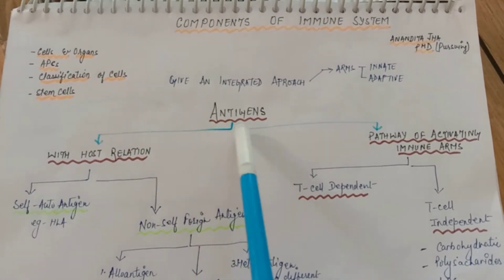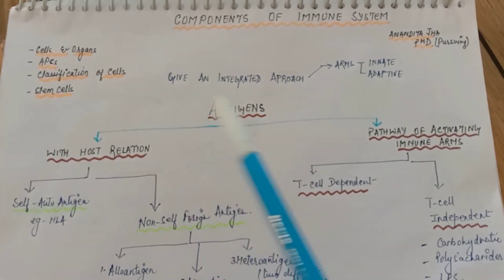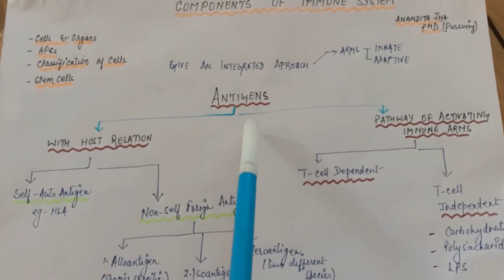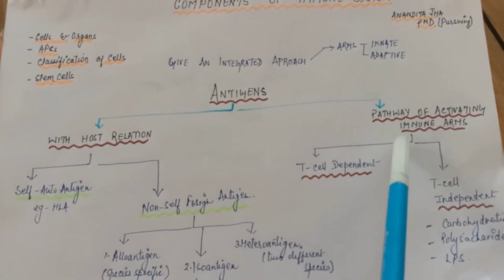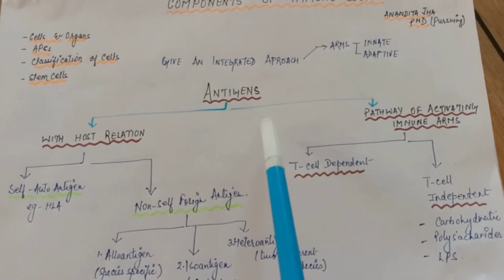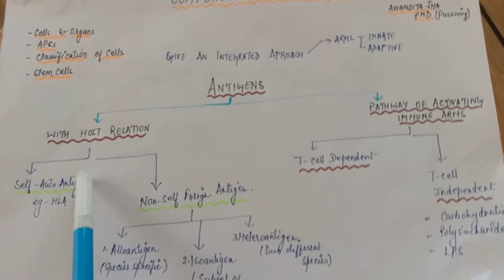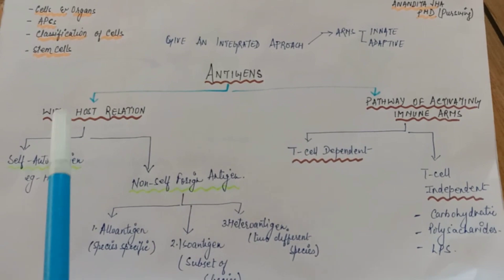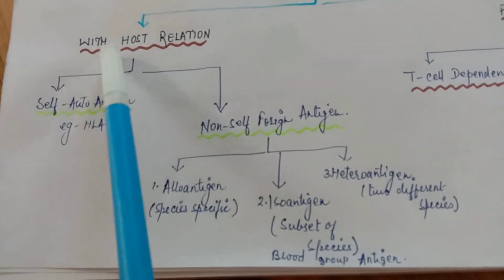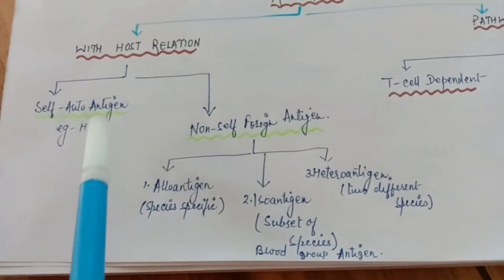They can be classified in two ways. First we have the host kind of approach. We have self antigen, an example is HLA, human leukocyte antigen. I think you might be having a brief idea about it.